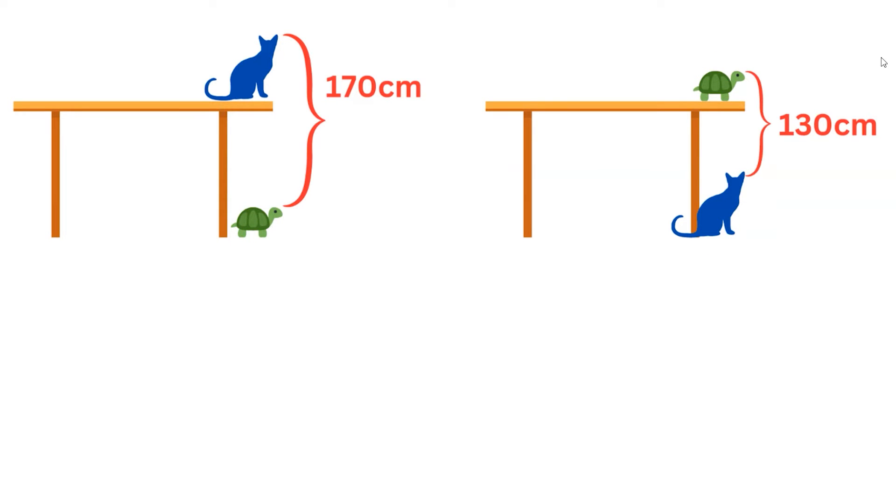Now talking about the first condition, when the cat is on the table, the total length starting from the head of the cat up to the head of turtle is 170 centimeters. In other words, we can say the total height of cat plus the height of table minus the height of turtle is given as 170.